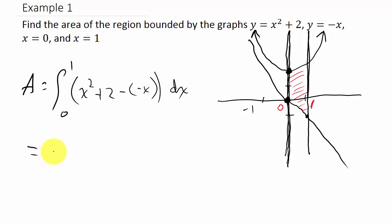And so this is going to give me, from 0 to 1, x squared plus x plus 2 dx. Now the minus and minus is a plus, and so that's where I get the plus x from.